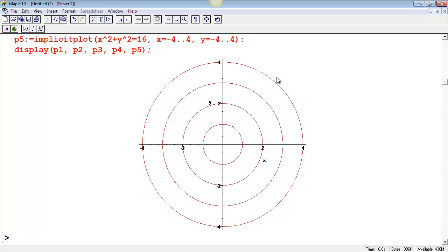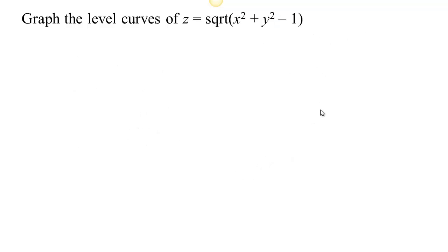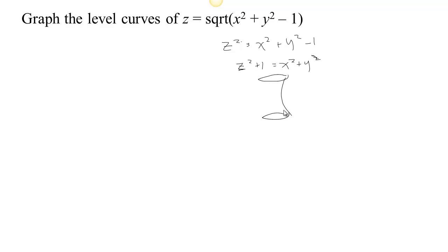Equal spacing between the contour lines means the surface is not getting steeper — it has the same steepness throughout. Now let's look at another surface and its level curves. If we square both sides we get z squared equals x squared plus y squared minus one, or z squared plus one equals x squared plus y squared. No matter what value of z we choose, we get a circle, so this is going to be a hyperboloid of one sheet.